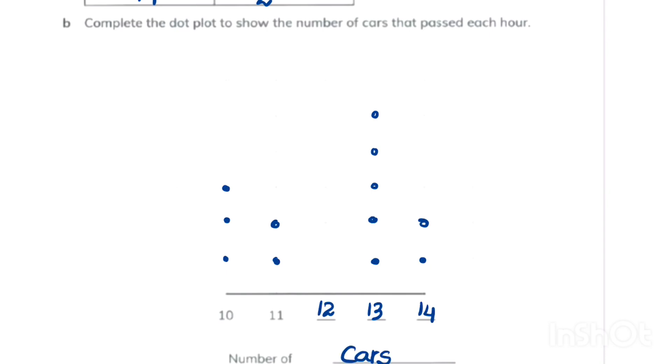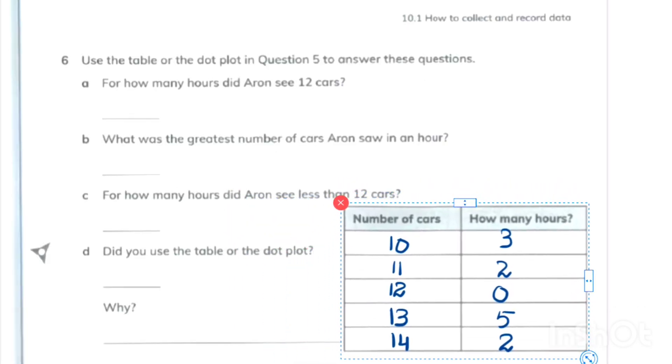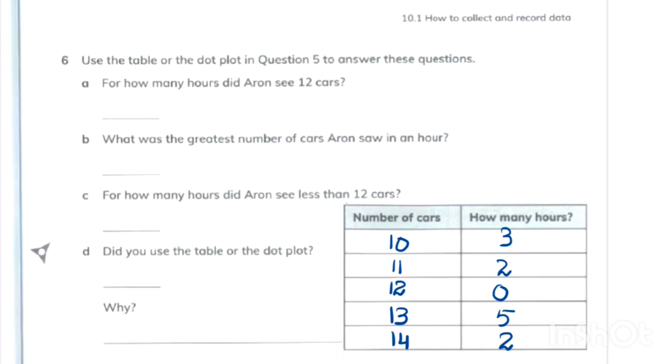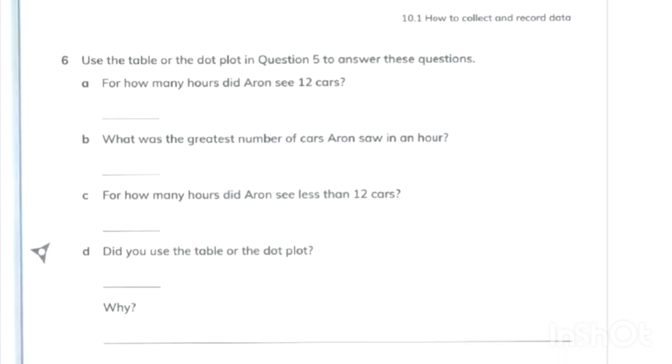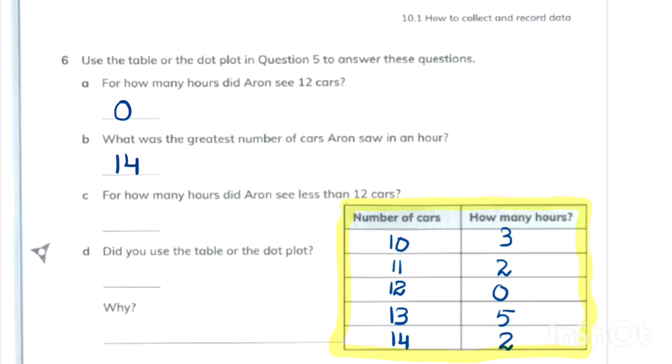This question is also related to the previous one. They want us to answer the questions according to our table or a dotted plot. You can use whatever you like or whatever you want. I just brought my table here so I can easily answer the questions. For how many hours did Arun see 12 cars? Zero. What was the greatest number of cars Arun saw in an hour? So 14 number of cars is the greatest number. How many hours did Arun see less than 12 cars? Here we can see that he saw 10 cars for 3 hours and 11 cars for 2 hours, so 3 and 2 makes 5 hours.